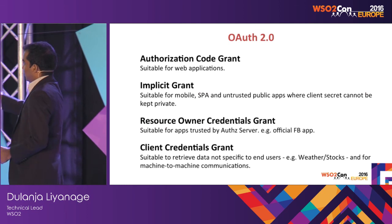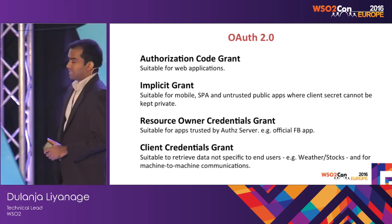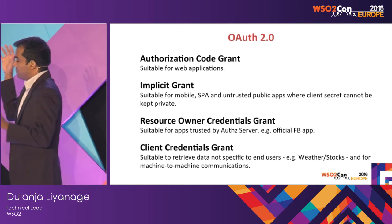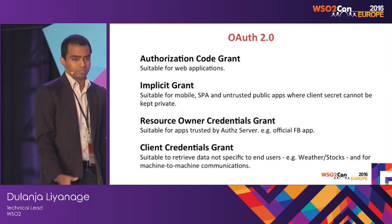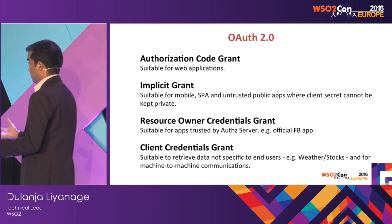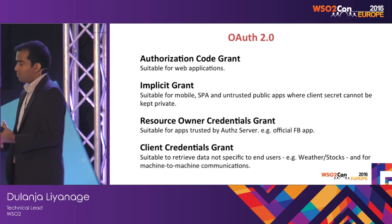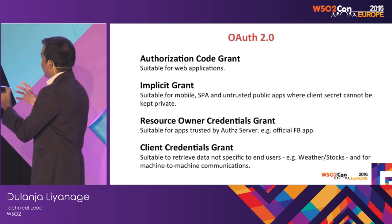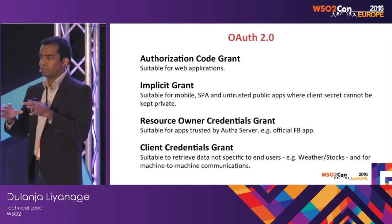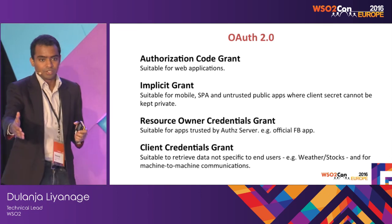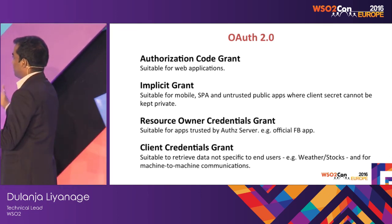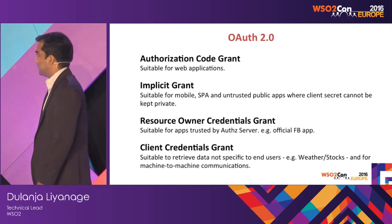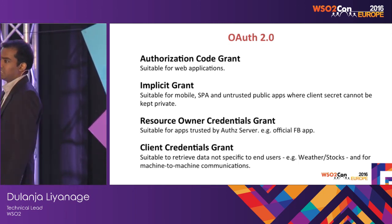There are four main grant types in the OAuth specification. Authorization code grant — the use case is a web application trying to act on behalf of a user, a server-to-server communication. Implicit grant is suitable for mobile and single page applications and other untrusted public apps. In those applications like a single page app, you can't keep the client secret because it is plain in the browser and anyone can read it. In such a use case, implicit grant is the one to use.